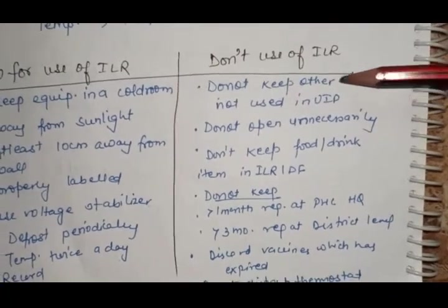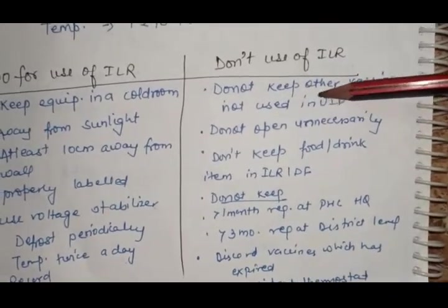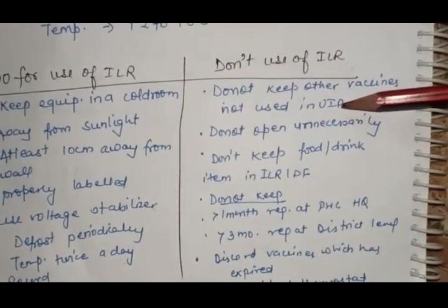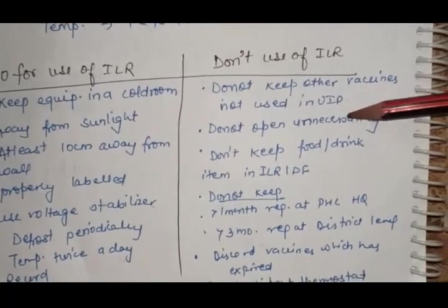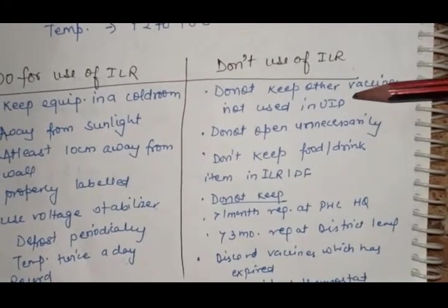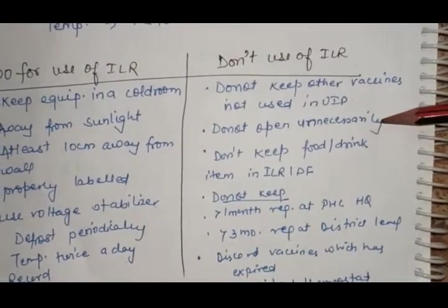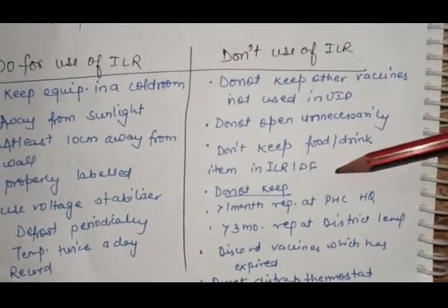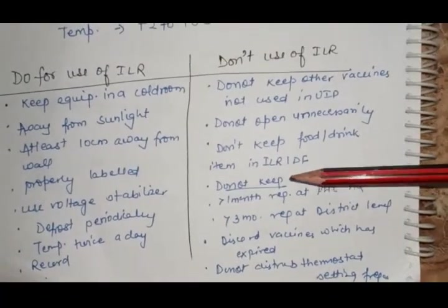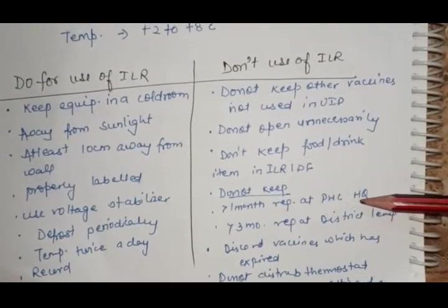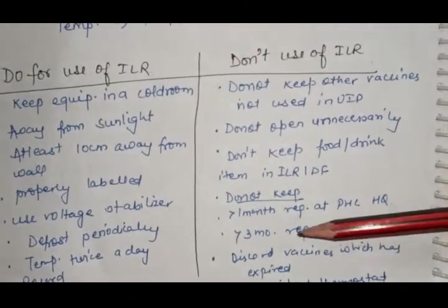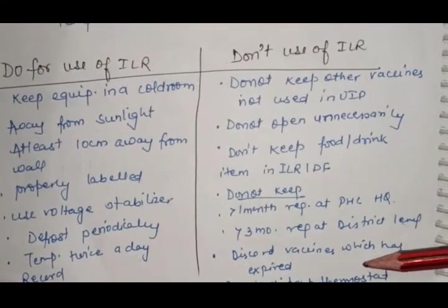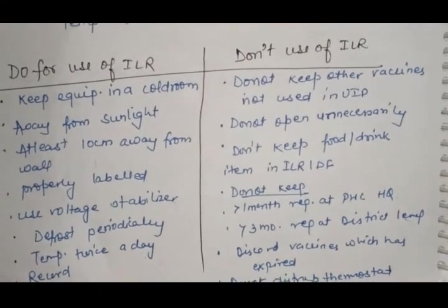DONTs for ILR: Do not keep other vaccines not used in universal immunization program. Only UIP vaccines should be kept. Do not open unnecessarily. Do not keep food or drink items. Do not keep more than one month requirement at PHC or more than three months at district level. Discard expired vaccines and do not disturb thermostat frequently.